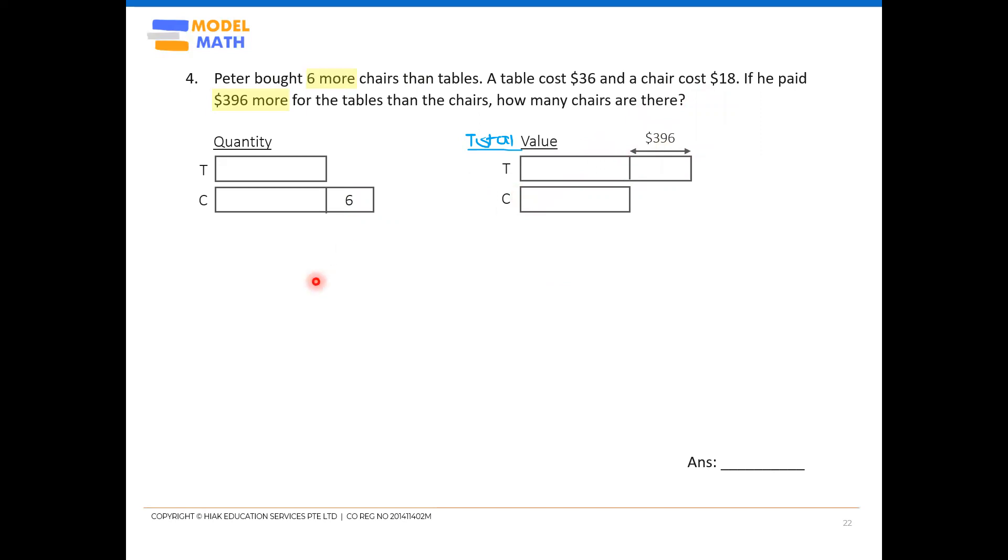We will choose to get rid of this extra six chairs first. Okay, because later on, it will be easier to convert quantity to a value instead of the other way around. Okay, so quantity and value later, you can do something to the value model later. So let's just lightly shade off the six.